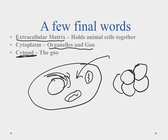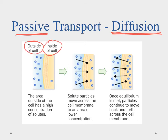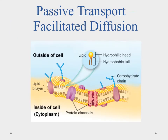The first method of transport is passive transport — diffusion. Things naturally move from high concentration to low concentration. Looking at a cell diagram, if the area outside has a higher concentration than inside, particles will move through the cell membrane into the cell. Once equilibrium is reached — concentration equal inside and outside — particles can move freely in and out.